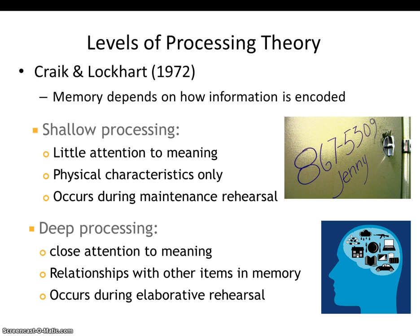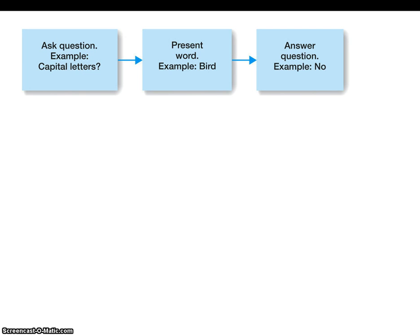Let's look at a basic levels of processing experiment. Participants in a study would be doing a memory test, but the experiment manipulated how they remembered the information. For example, they'd be asked a question such as: 'Does the word you'll see in a moment have capital letters?' Then the word would be presented — for example, 'Bird' with a capital B — and they'd have to answer yes or no.